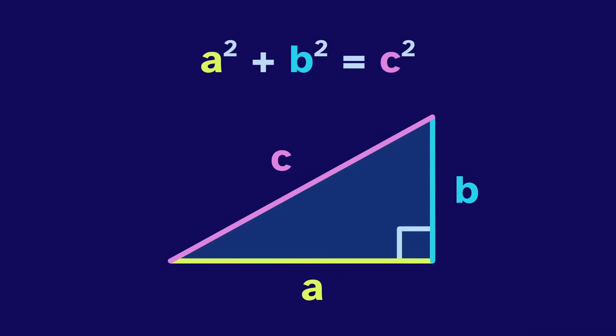What if we say that A is negative 1 and B is i? We can plug those values into the Pythagorean theorem, and we end up with C as 0. This may seem nonsensical. A triangle like this can't exist in the real world.